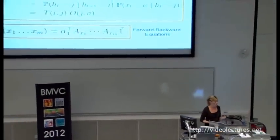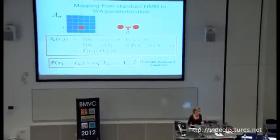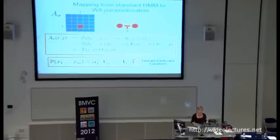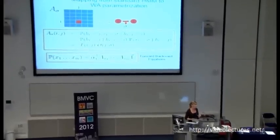How do we map from a standard HMM representation to the weighted automata representation? The operators essentially combine transition and emission probabilities: for each symbol, the entry at row i and column j is the probability of transitioning from state i to state j and emitting that symbol. Looking at it this way, you realize the weighted automata equation is essentially a matrix form of the forward-backward equation.